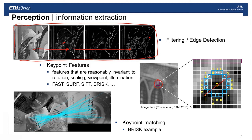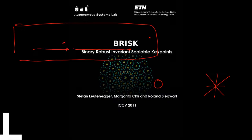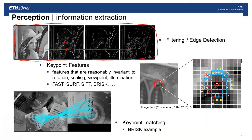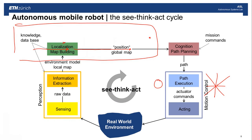All keypoint feature methods have something in common: they try to find, around a local point in an image, gradients in different directions, and these gradients are then representative of that point feature. If you have good point features, they are typically rotation-, scale-, and view-invariant, so you can match the same features seen from different viewpoints, different resolutions, and even with different illumination. One example can be seen in this video, where features are tracked robustly from one image to the next with today's very sophisticated feature methods.